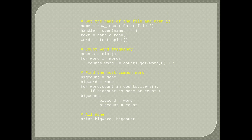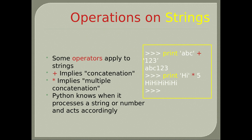Here are examples of comments. Operations on strings: some operators apply to strings. Plus implies concatenation. Asterisk implies multiple concatenation. Python knows when it processes a string or number and acts accordingly. print('ABC' + '123') will give ABC123, while print('hi' * 5) will give hihihihihi.